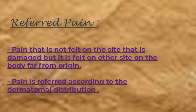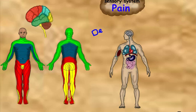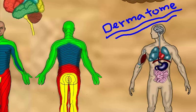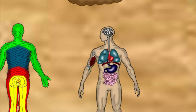Starting with Referred Pain. Referred Pain is a term used to describe pain that is not felt on the side or tissue that got the damage, but is felt on other side of the body far from the origin. Pain is referred most of the time according to the Dermatomal Distribution, which we talked about in our previous video. Now we will look at this Dermatomal Body Map and take examples for Referred Pain.